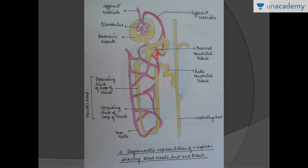It flows into the proximal convoluted tubule — proximal means near, convoluted means loopy or not straight, and tubule means a small tube. It further continues into the loop of Henle, which has two limbs: the descending limb and the ascending limb, both with different functions. Then we have the distal convoluted tubule — distal means farther from the glomerulus and Bowman's capsule, which together are called the Malpighian corpuscle.